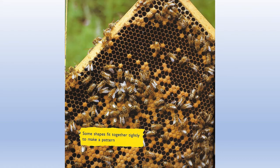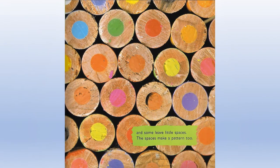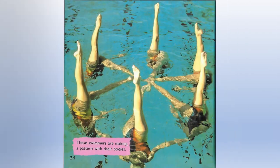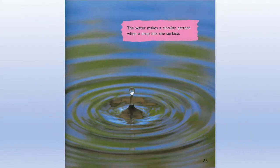Some shapes fit together tightly to make a pattern. And some leave little spaces. The spaces make a pattern, too. These swimmers are making a pattern with their bodies. The water makes a circular pattern when a drop hits the surface.